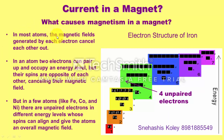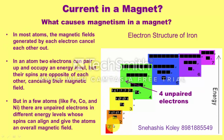In most atoms, the magnetic fields generated by each electron cancel out each other. As shown here, two electrons are represented by two arrows: one up arrow and one down arrow, representing up spin and down spin. If one electron is up spin and one is down spin, their total magnetic field is cancelled out. But in the case of iron, there are four unpaired electrons. In atoms like iron, cobalt and nickel, there are unpaired electrons whose spins can align and give the atom an overall magnetic field.